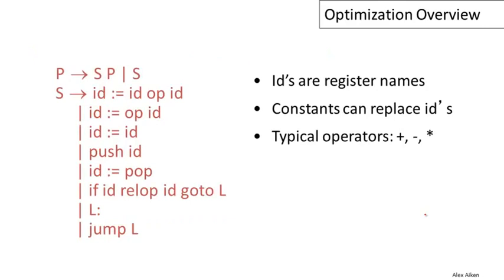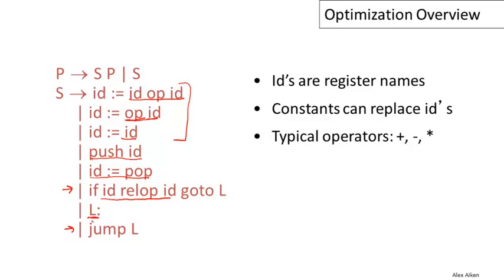We will be looking at optimizations that work on intermediate language with operations given by this grammar. A program is a sequence of statements, and a statement consists of either an assignment — which could be a simple copy, or a unary or binary operation — we can push and pop things from a stack, and then we have a couple of different kinds of jumps: a comparison-and-jump where we compare two registers and conditionally jump to a label, unconditional jumps, and finally labels as targets of jumps.